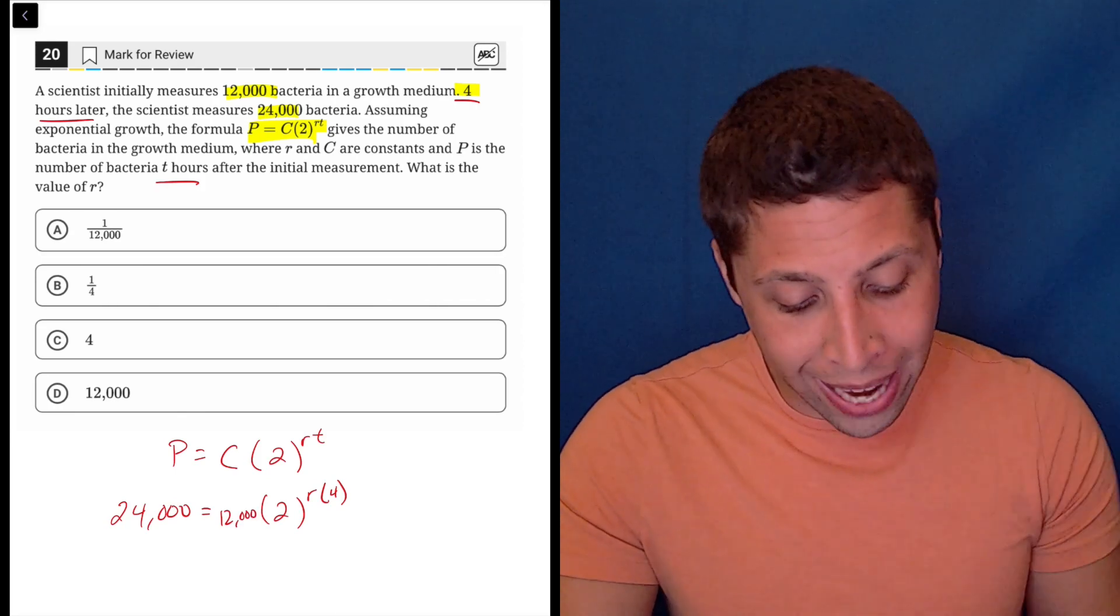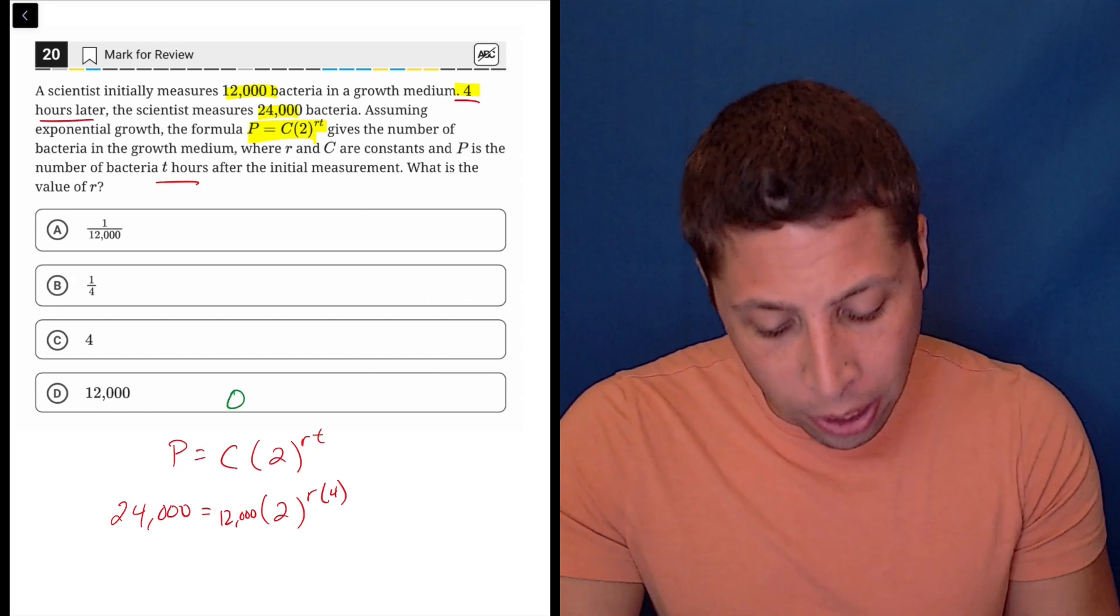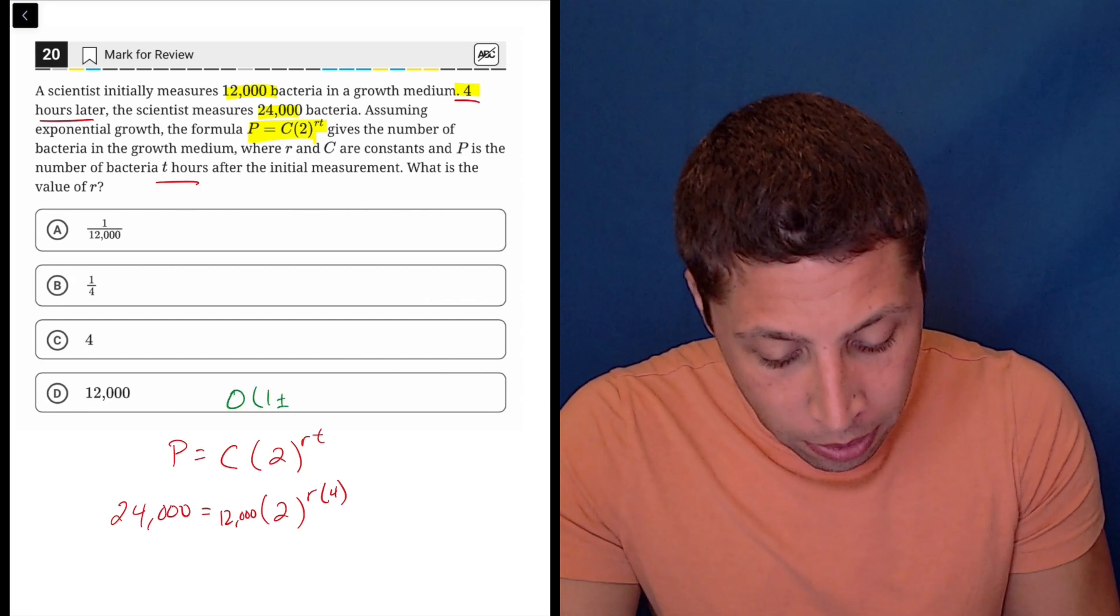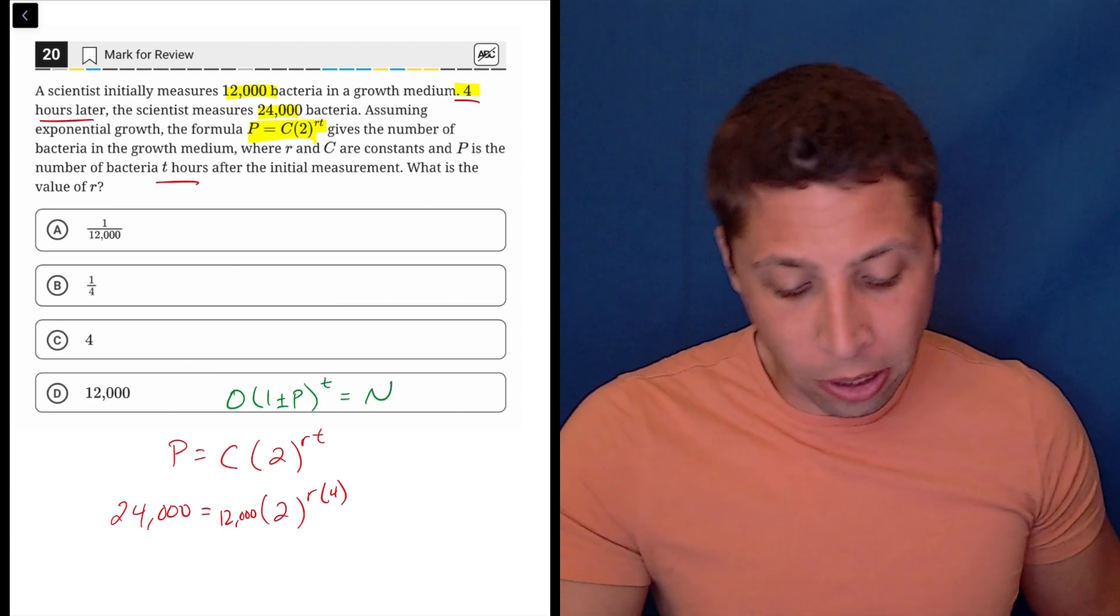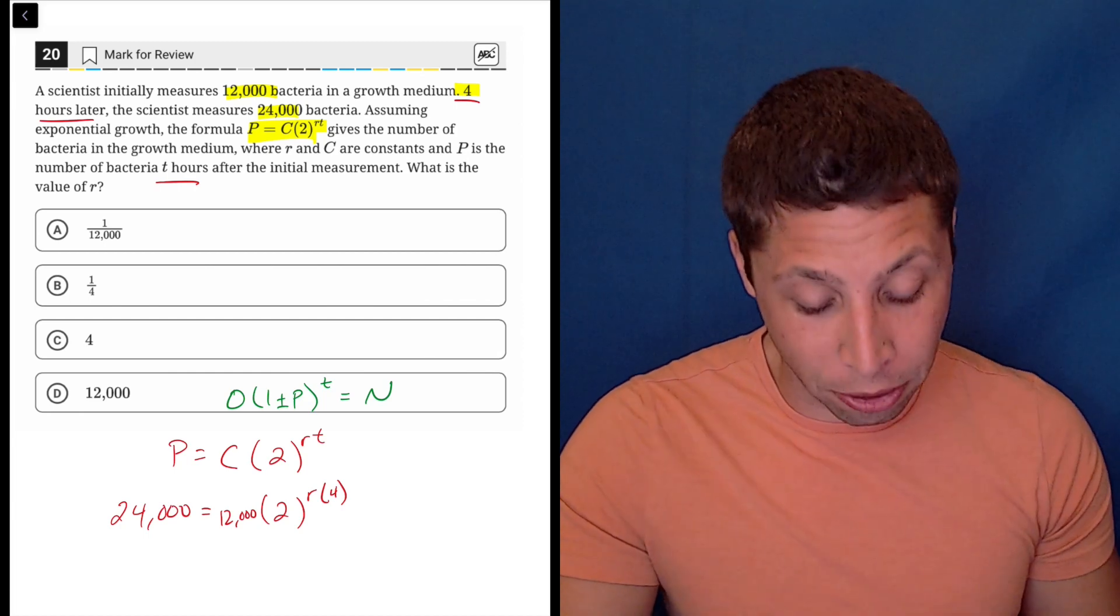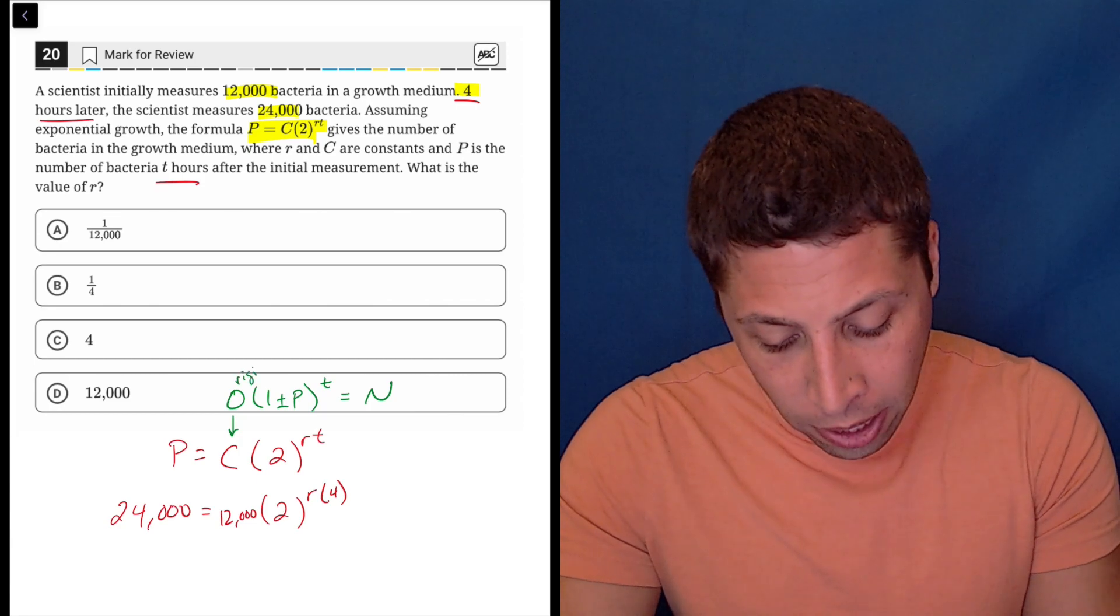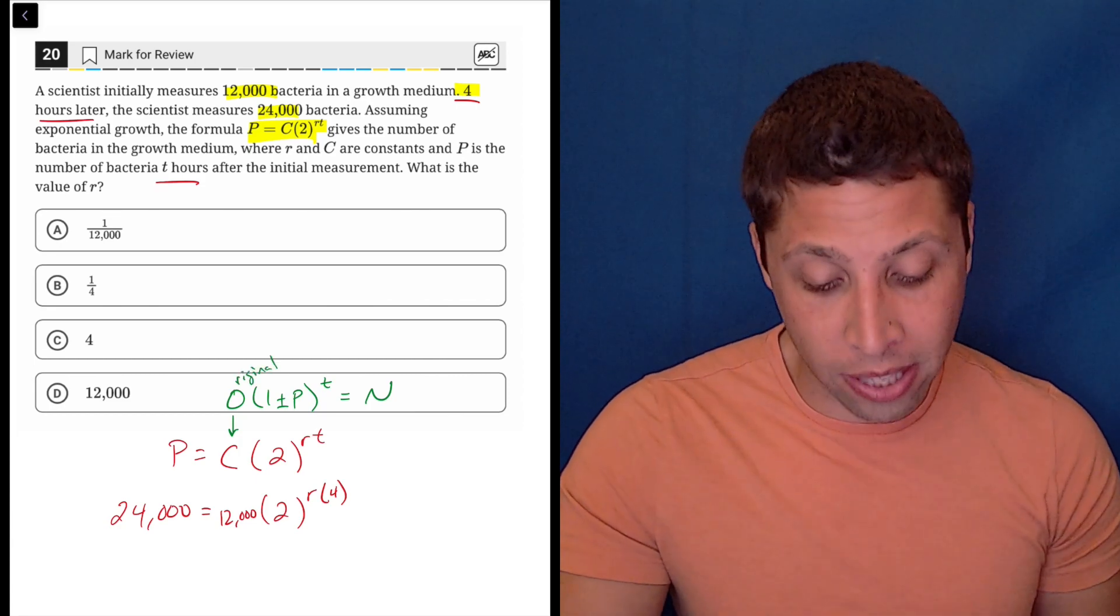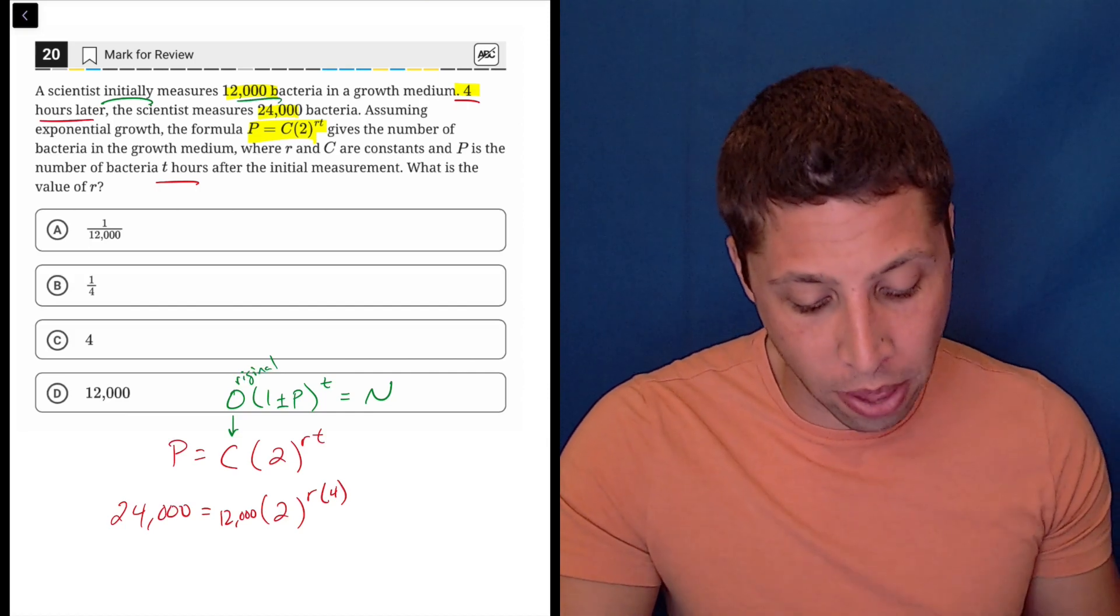The reason we should know that anyway is this formula mimics what I call the OPEN formula that I use for exponentials. It's a little different—it kind of looks like the word open. You've maybe seen in my other videos, but basically, the O stands for the original amount, which matches up with C. They tell us it's initially 12,000 bacteria, so that's why I know that would go there.